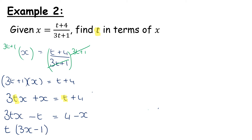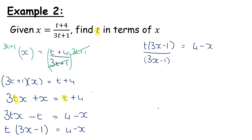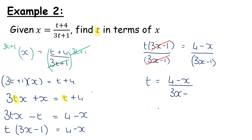Be careful: we've taken out a t from minus t and we're left with minus 1. The double check is t multiplied by minus 1 gives minus t. And that equals 4 minus x. We now have t multiplied by something, so in order to get rid of that, I'm going to divide both sides by 3x minus 1, which on the left-hand side will cancel, leaving us with t equals 4 minus x all over 3x minus 1.